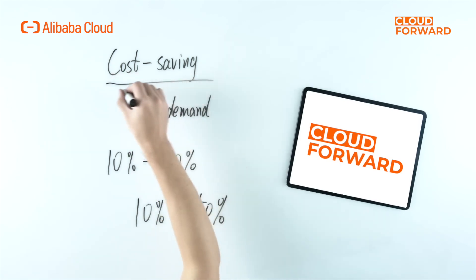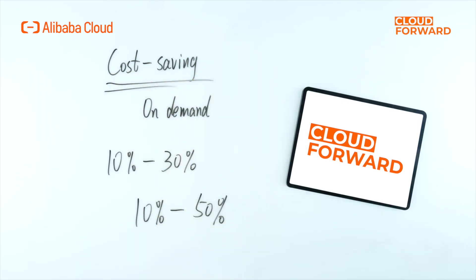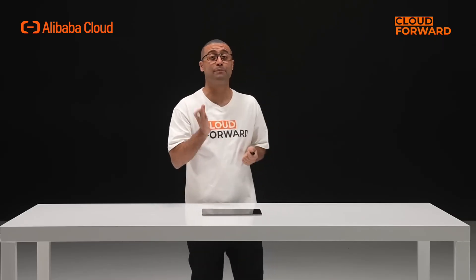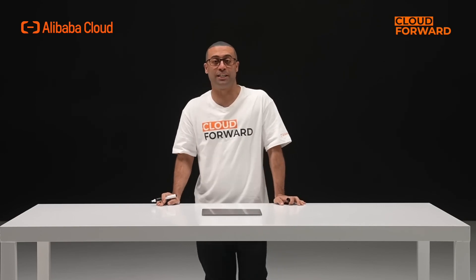Cost Saving: EMR clusters can be automatically adjusted to match workload on demand, saving 10% to 30% of your costs. It is also compatible with ECS billing methods like preemptible instances and reserved instances, and it supports storage-compute separation. Data can be tiered by hot and cold, saving another 10% to 50% of storage costs.